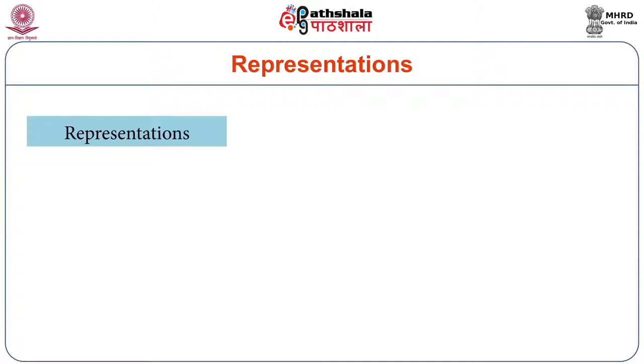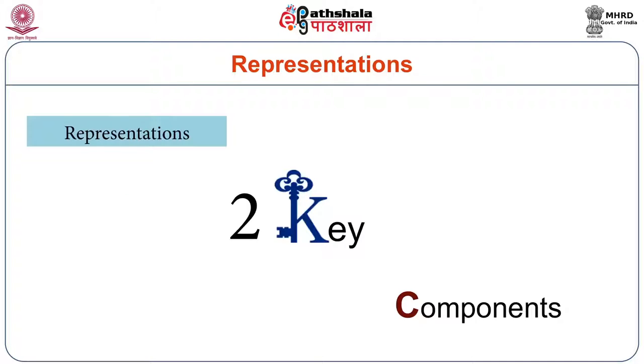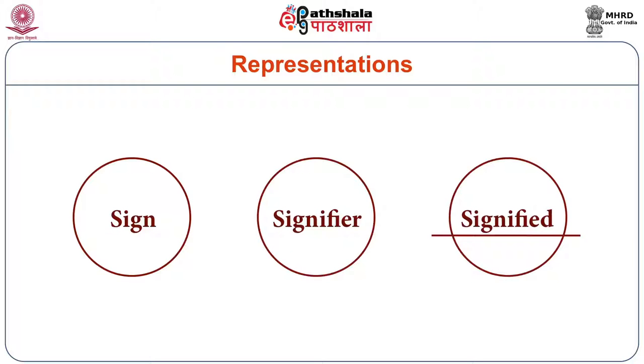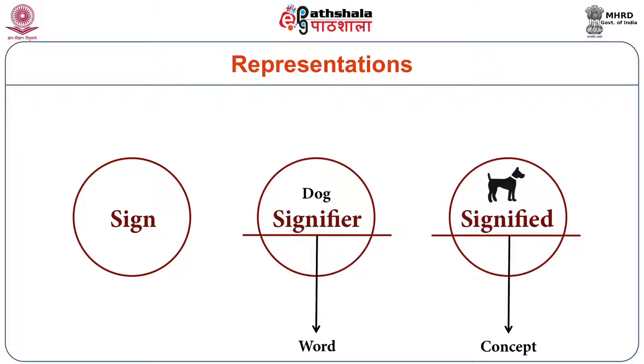Representations involve two key components in any language. A sign as we understand it is constituted by a signifier and a signified. The signifier is a word; the signified is a concept. Any language requires these two to work together. The problem, however, is these connections are not always obvious.